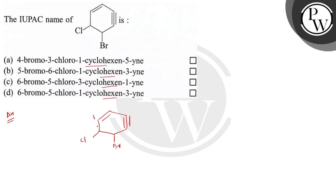can be done clockwise or anticlockwise, but here clockwise numbering will be more appropriate because it will include the triple bond with the lowest locant. So it is 1, 2, 3, 4, 5, and 6. This is bromo and this is chloro.